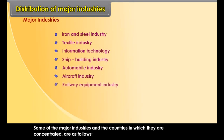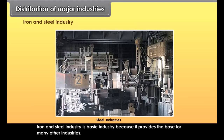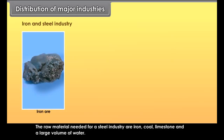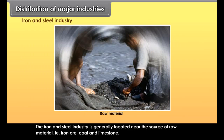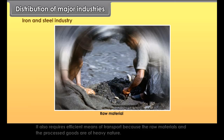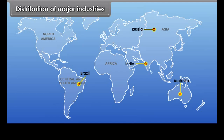Iron and steel industry is a basic industry because it provides the base for many other industries — the machines necessary for other industries are made from iron and steel. The raw materials needed are iron, coal, limestone, and a large volume of water. Iron and steel industries are generally located near the source of raw materials — iron ore, coal, and limestone — and require efficient transport because both raw materials and processed goods are heavy.